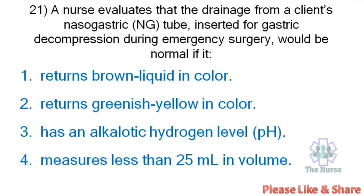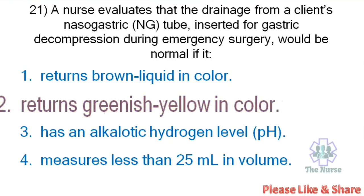Next question: A nurse evaluates drainage from a client's nasogastric tube inserted for gastric decompression during emergency surgery. The drainage would be normal if it: returns brown liquid in color, returns greenish yellow in color, has an alkalotic pH, or measures less than 25 ml in volume. Correct answer: Returns greenish yellow in color — that is the color of bile.